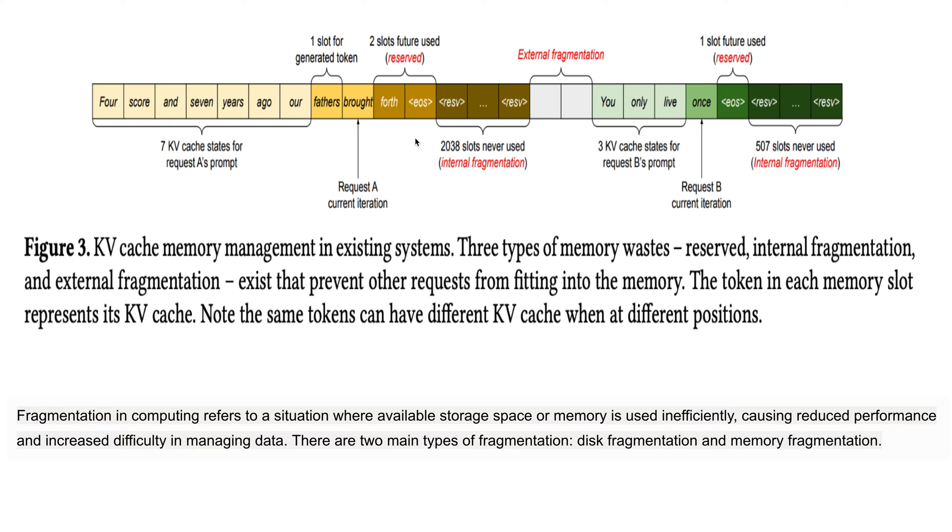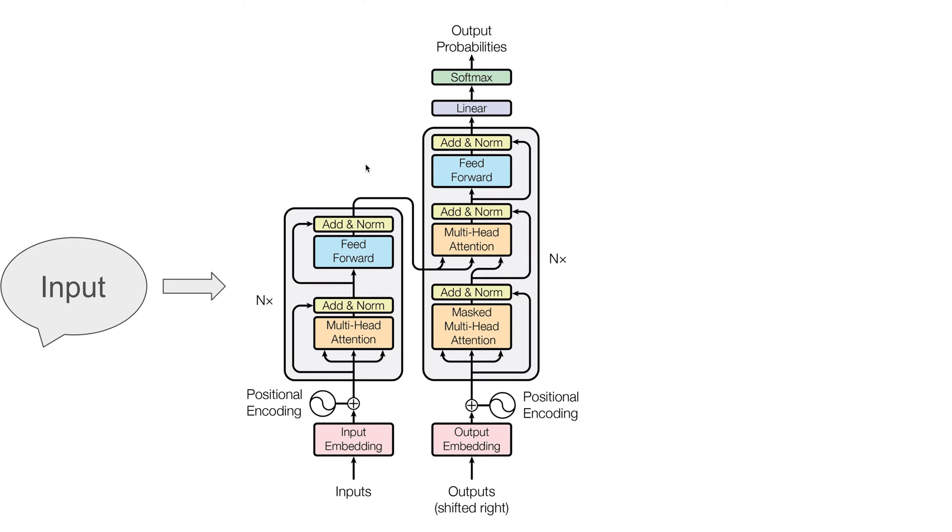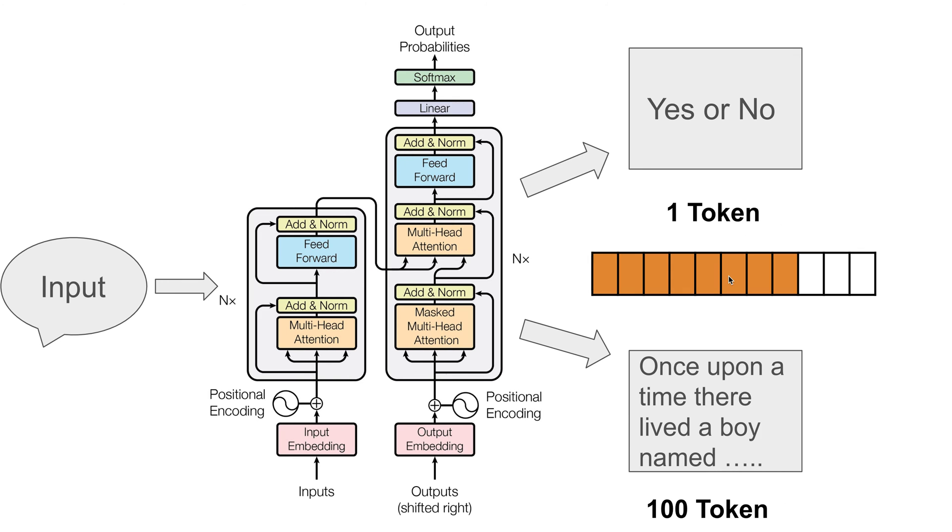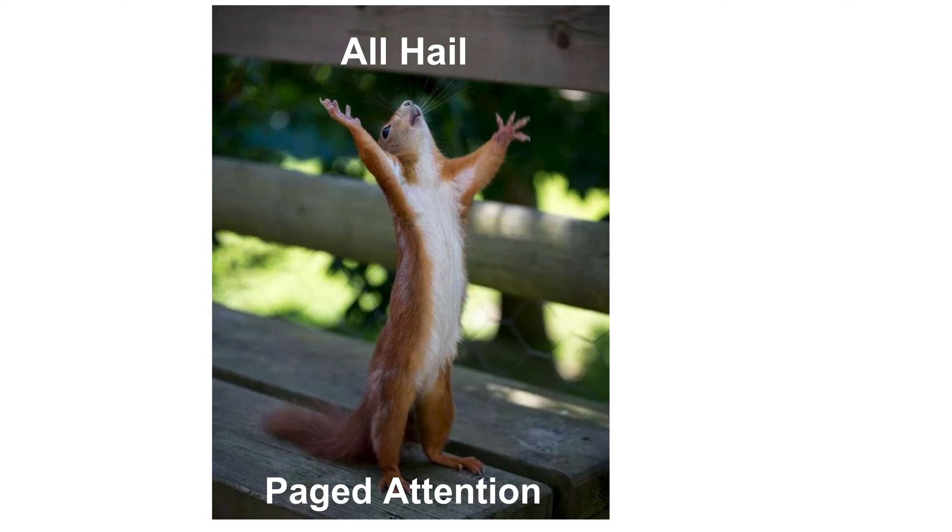This is the whole concept of KV cache - you see here a lot of memory is getting wasted. This is your transformer, you give it some input. It can be a yes or no, it can be a hundred token thing, a whole sentence, but every time your model is reserving a fixed amount of space. This is waste of space.